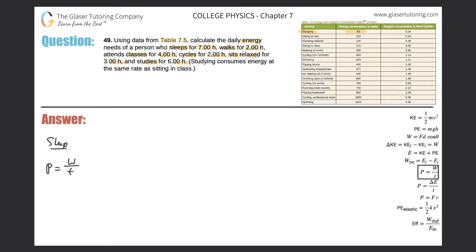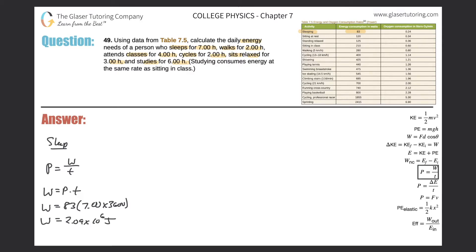Sleeping consumes 83 watts of power. Work equals power times time, so the work for sleep is 83 watts multiplied by the time. The time is in hours, but we need it in seconds, so we multiply by 3,600. That's 7 hours times 3,600. So 83 times 7 times 3,600 gives us 2.09 times 10 raised to the sixth joules. This is the energy needed to maintain your body during sleep.